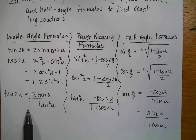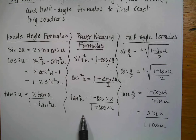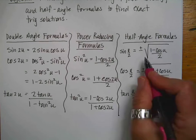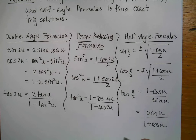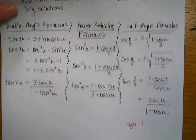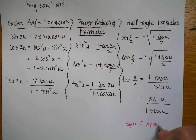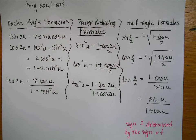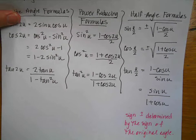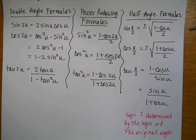The double angle formulas are written here. The power reducing can get to be rather entertaining, and we'll talk about this as we go through some examples. The half angle formulas — notice that they are all, at least for sine and cosine, plus or minus. The sign that you're going to use, either the plus or the minus, is going to be determined by the sign of the original angle. You can pause and write them down or copy them out of the front of your book — your choice.